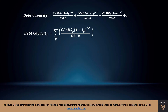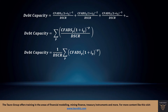If we express that in sigma notation, we get the sum of CFADs multiplied by a discount factor, divided by the debt-service cover ratio. We know algebraically that we can take that constant debt-service cover ratio out as a common factor. That gives us 1 over the debt-service cover ratio, multiplied by the sum of each year's CFADs multiplied by an appropriate discount factor. So the debt capacity, or amount of debt at time zero, equals 1 divided by the debt-service cover ratio multiplied by the sum of CFADs multiplied by an appropriate discount factor.